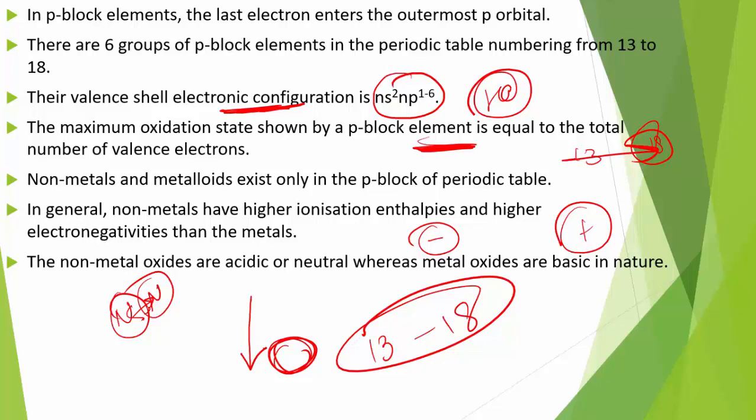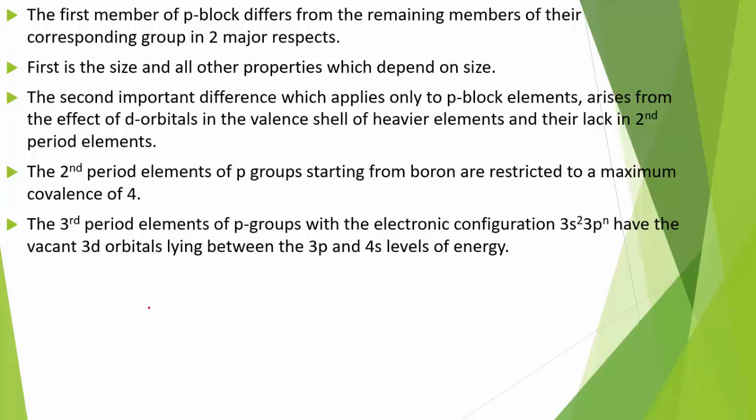The first member of each group differs from the remaining members in two major respects. First, size and all properties dependent on size — the lightest P-block element shows the same kind of difference as the lightest S-block elements, lithium and beryllium. Second, the effect of d-orbitals in the valence shell of heavier elements, which are absent in second period elements.